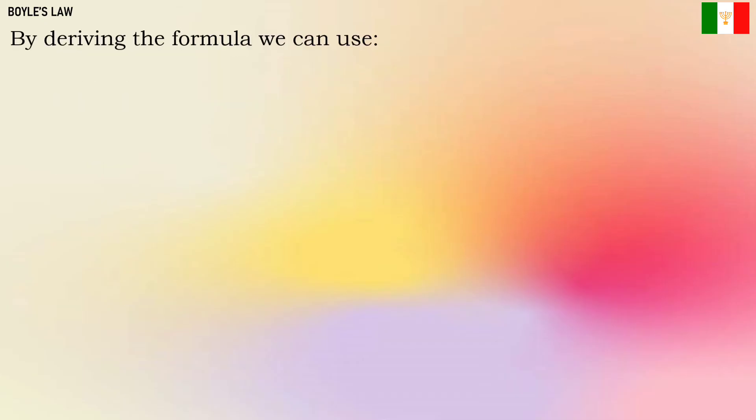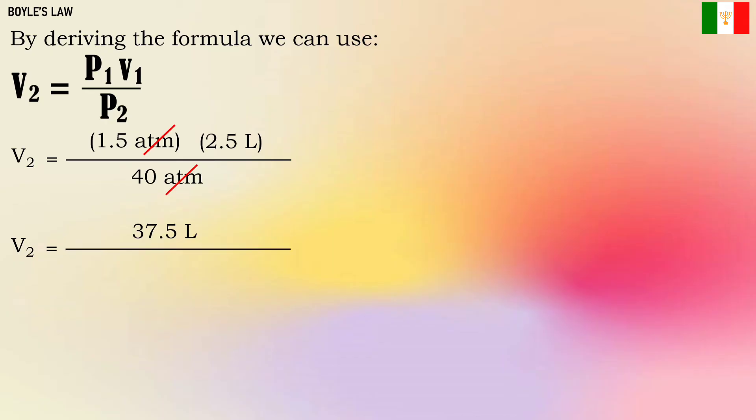By deriving the formula, we can use V₂ = P₁V₁/P₂. We'll substitute the values. Don't forget to cancel when there are the same units. 1.5 times 25, the answer is 37.5 liter. Divide it by 40. Our final answer is 0.94 liter.